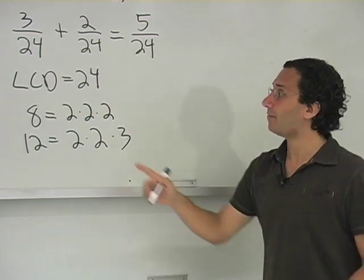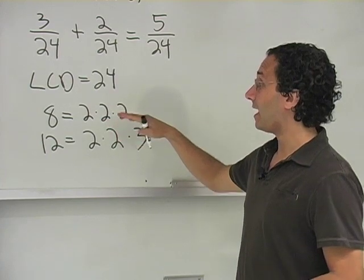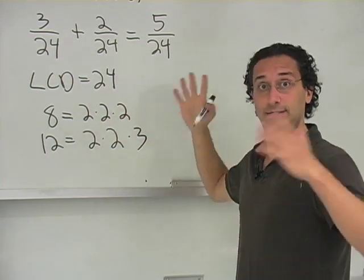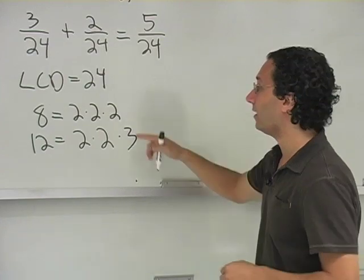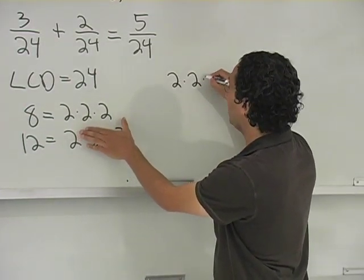So we want the smallest number that these guys divide into. Well, for it to divide, for 8 to divide into this number that we haven't thought of yet - it's going to be 24 - for 8 to divide into it, that number better have these factors.